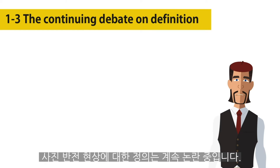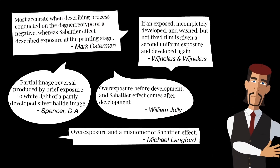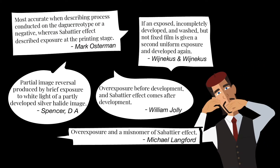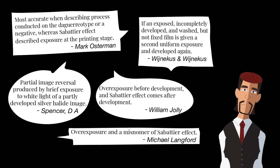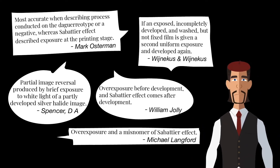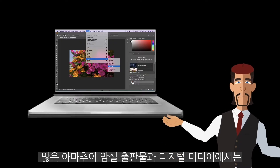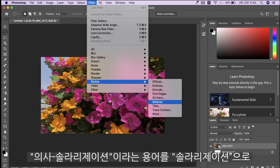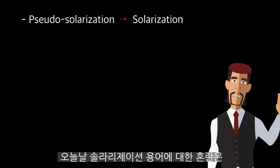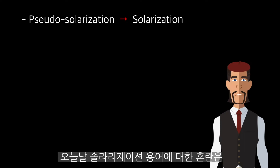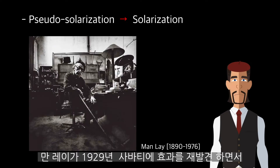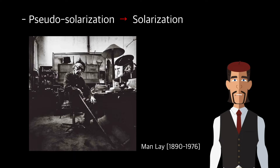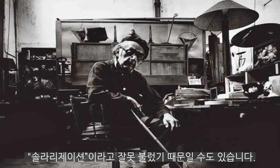Still, there is continuing debate and confusion about the accuracy of the term. In many amateur darkroom publications and digital media, the term pseudo-solarization has been shortened to solarization. Today's conflation of solarization is mainly due to Manley, who rediscovered this process in 1929 and called it solarization instead of the Sabatier effect.